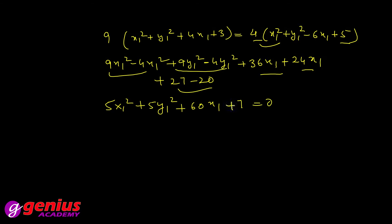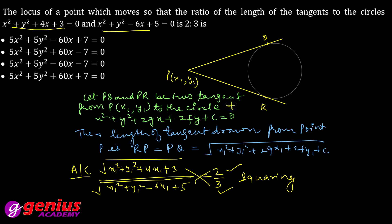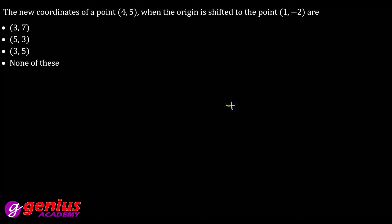All terms shifted to one side, so the locus becomes: 5X² + 5Y² + 60X + 7 = 0. This matches option 4. Next question.